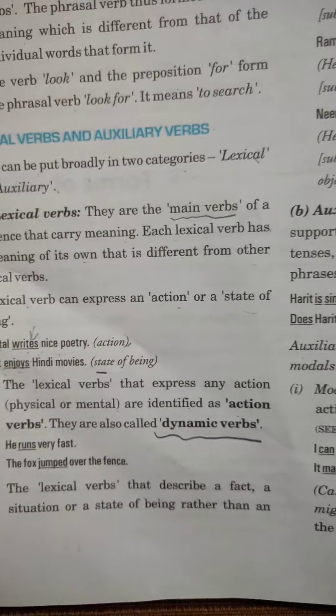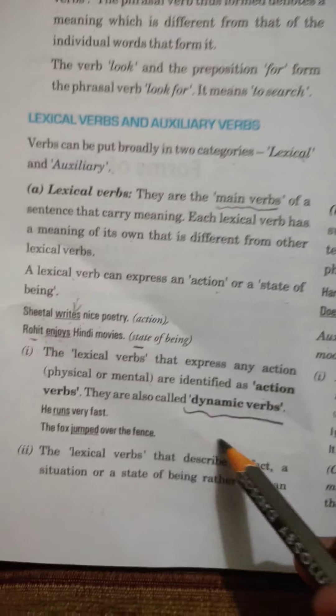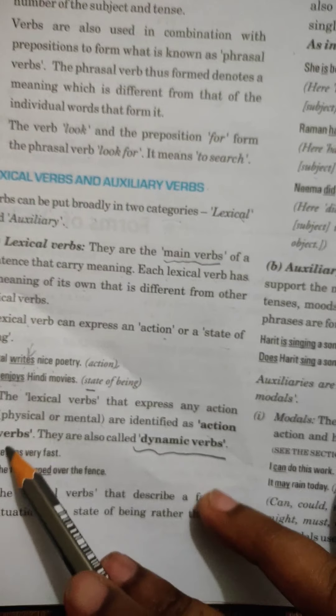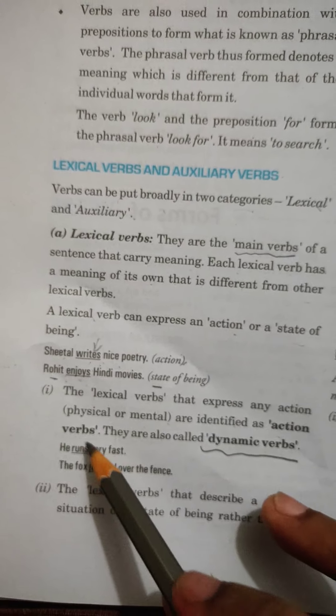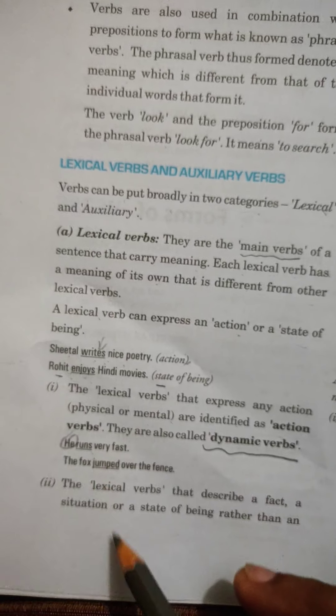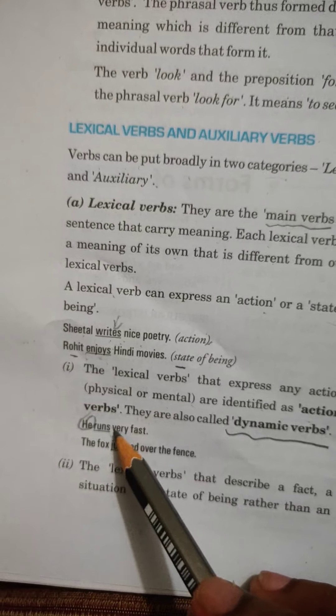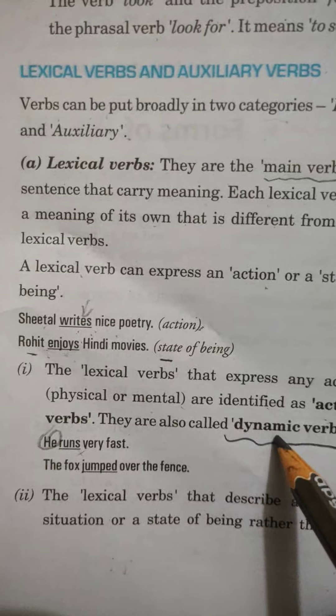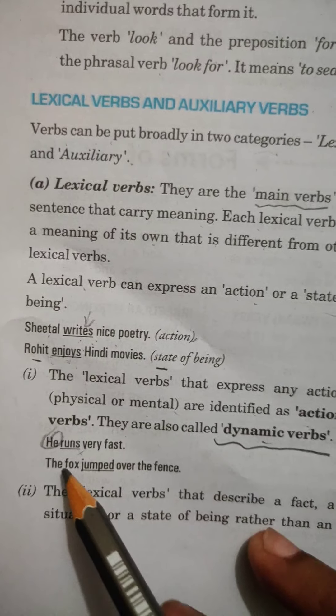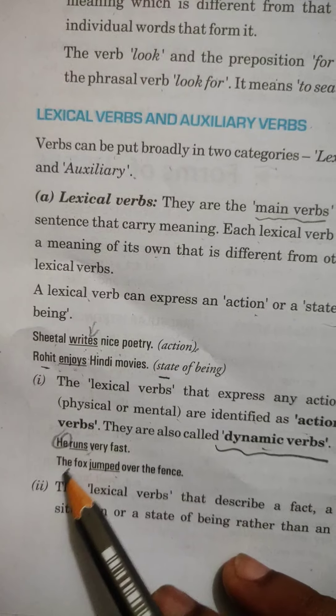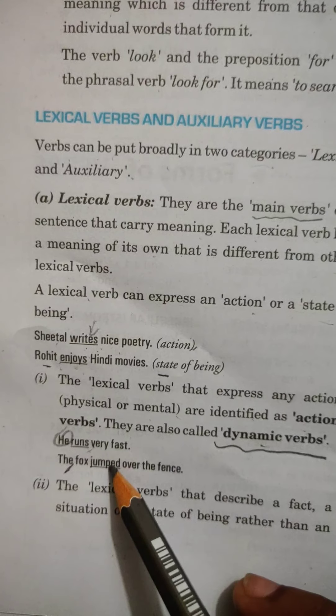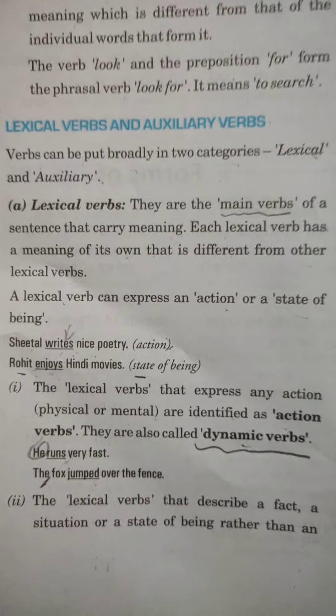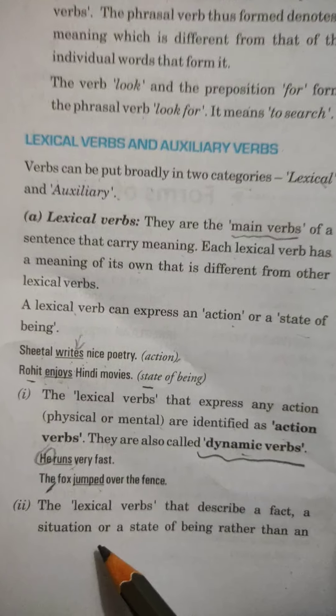So, this is the new term which you will have to learn. He runs. Now, the action done by the subject, he. So, physical activity is there. Therefore, it will be known as dynamic verb. The fox jumped. Again, something has been done by the fox. Yes. So, he jumped. Body involvement is there.